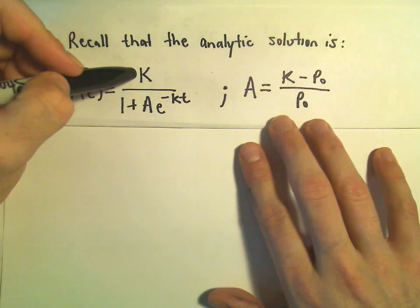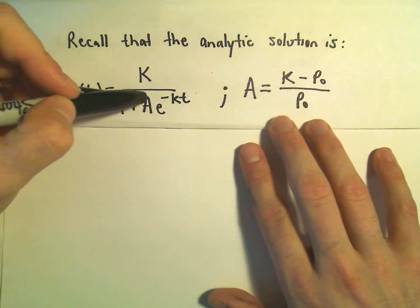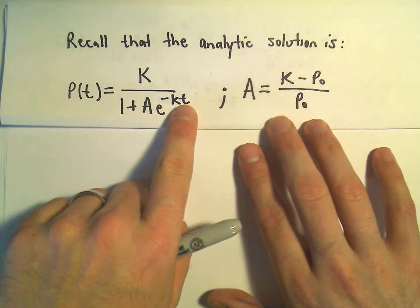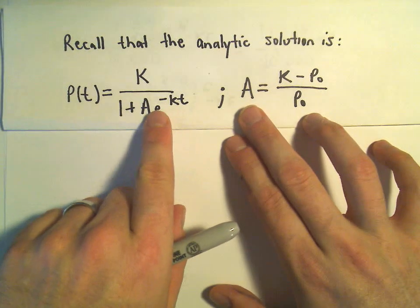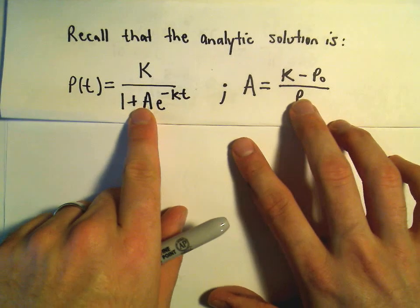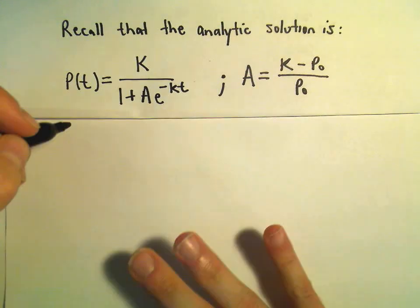It was capital K, which is the carrying capacity, 1 plus A, e to the negative, this is little k, times t. And again we had a way to calculate capital A. It's the carrying capacity K minus the initial population, divided by the initial population.